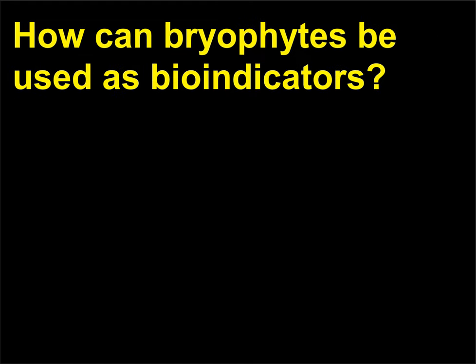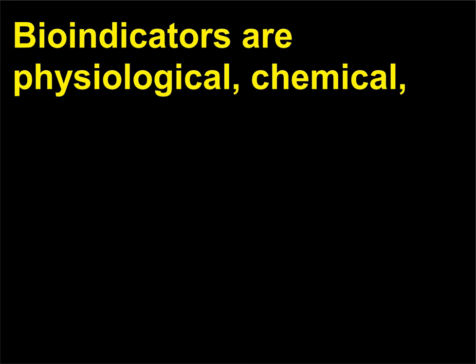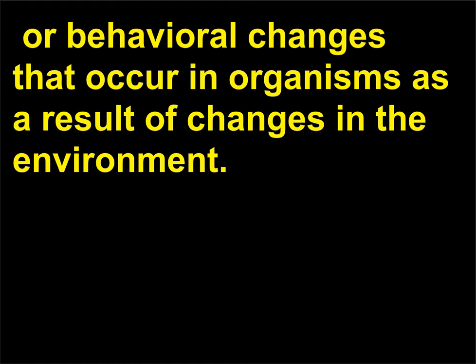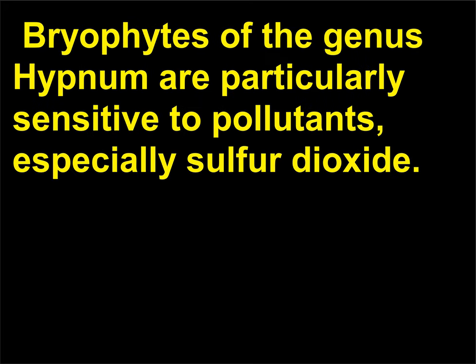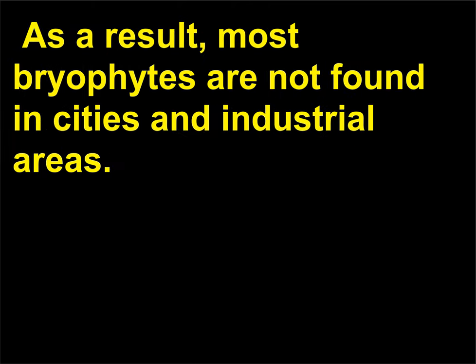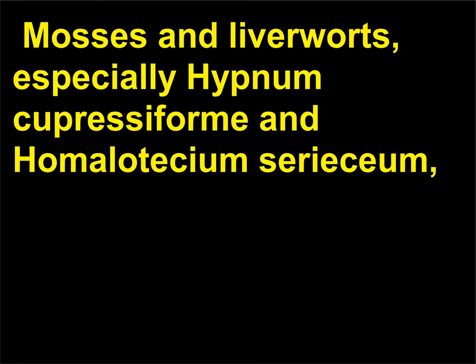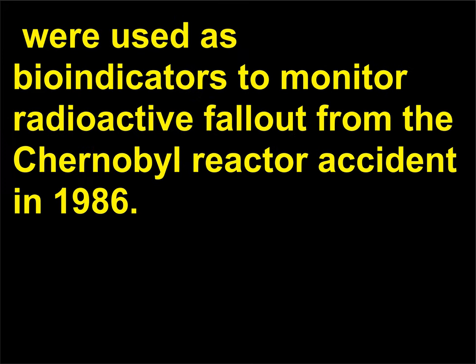How can bryophytes be used as bioindicators? Bioindicators are physiological, chemical, or behavioral changes that occur in organisms as a result of changes in the environment. Bryophytes of the genus Hypnum are particularly sensitive to pollutants, especially sulfur dioxide; as a result, most bryophytes are not found in cities and industrial areas. Mosses and liverworts, especially Hypnum cupressiforme and Homalothecium sericeum, were used as bioindicators to monitor radioactive fallout from the Chernobyl reactor accident in 1986.